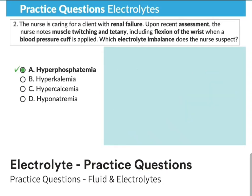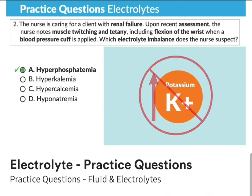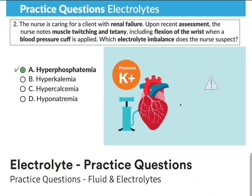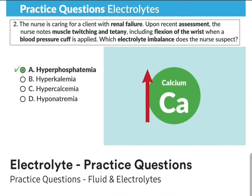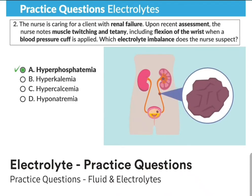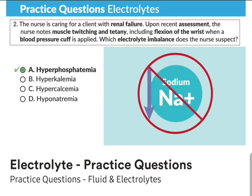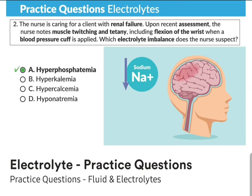Options B, C, and D are incorrect. Hyperkalemia — option B — is high potassium; we'd expect high pumps in the heart, like dysrhythmias. Hypercalcemia — option C — was close but wrong; we'd expect kidney stones, moans, and groans. Option D, hyponatremia — low sodium — is incorrect because we'd expect signs of cerebral edema and brain swelling, with one of the first signs being agitation and new mental status changes.